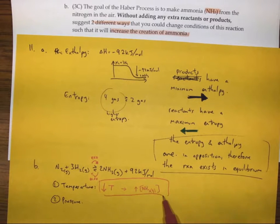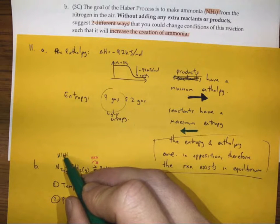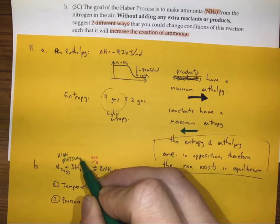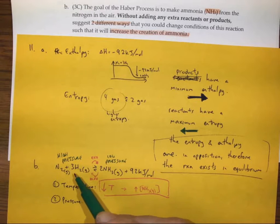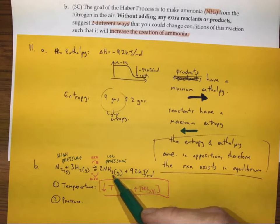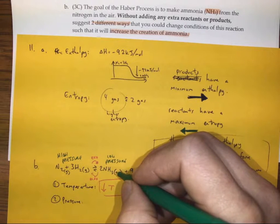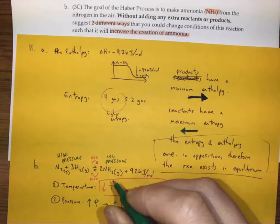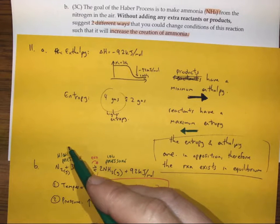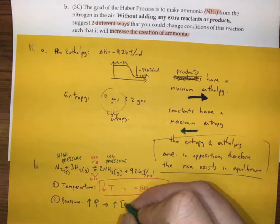We can also manipulate pressure. To do that I need to know the high and low pressure side. There are four gases on the reactant side — that's high pressure — and only two gases on the product side, so that's low pressure. So if I want to shift this to the right, the reaction is going to decrease in pressure by shifting to the right. That must be in response to an increase in pressure, which causes an increase in the low-pressure system, so the reactants combine to form products and increase the amount of ammonia.